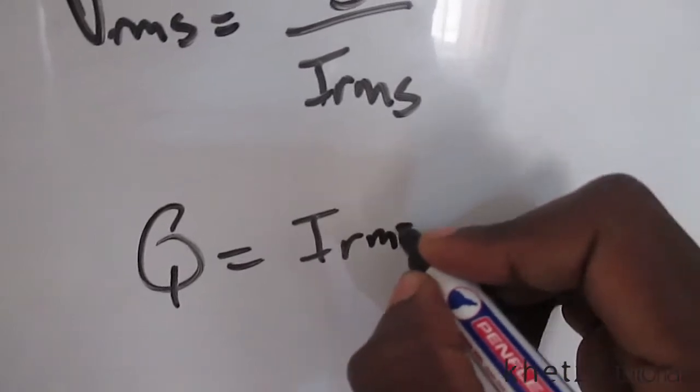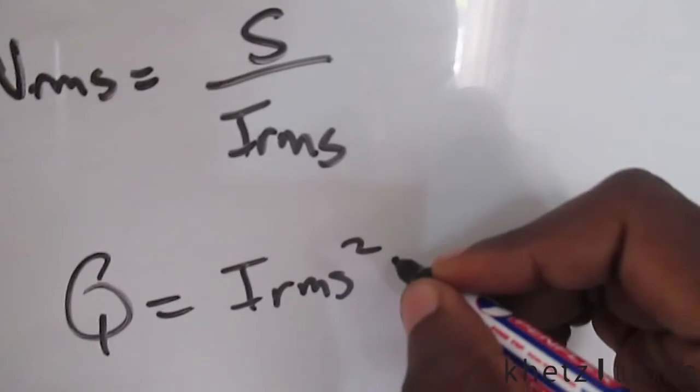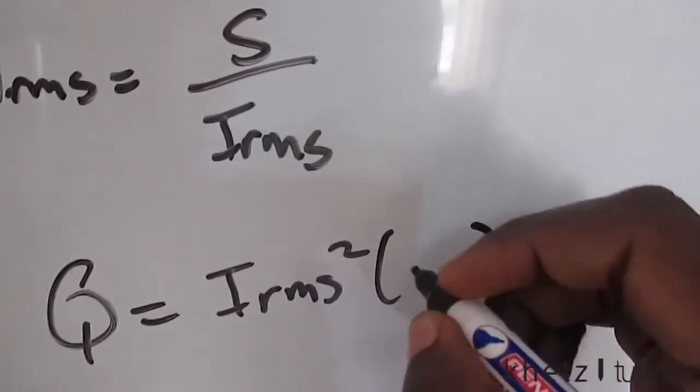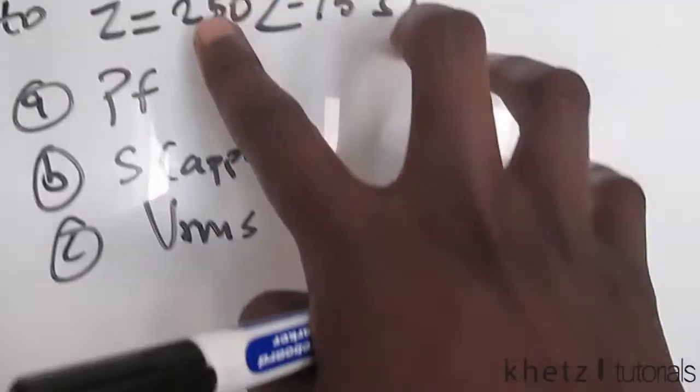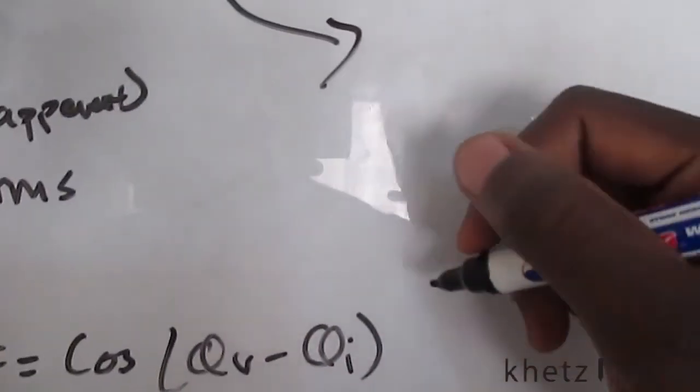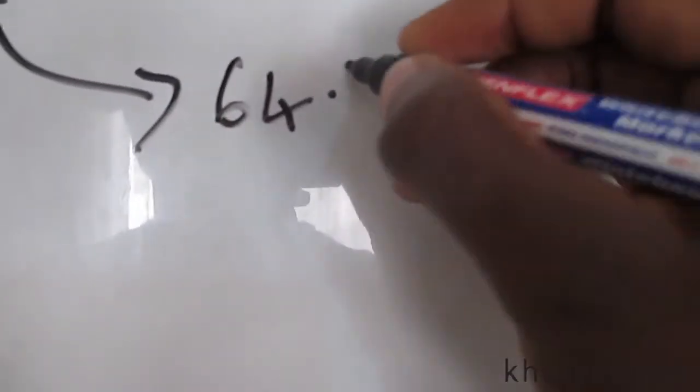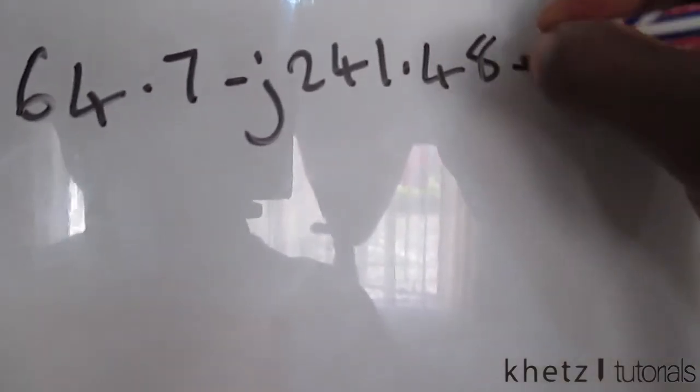find it using this formula multiplied by the complex part of your impedance. This impedance is given to us, so you can just transform it into rectangular form and you should get this value as your rectangular form representation.